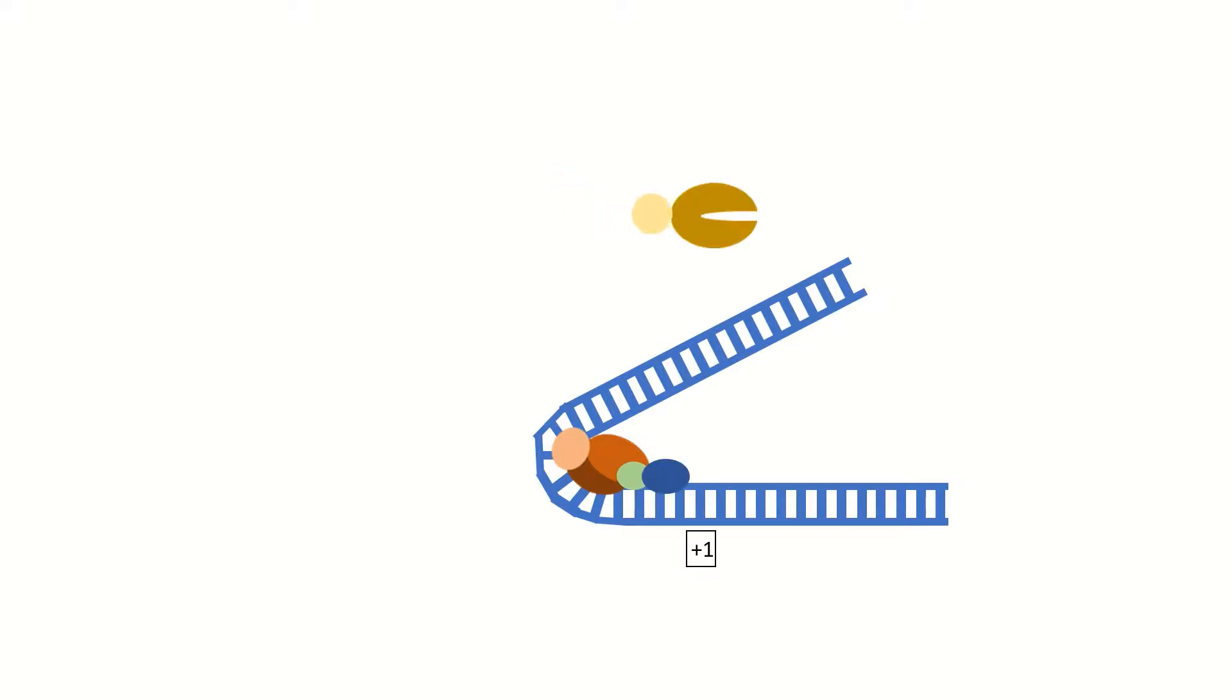TF2F associates with RNAP2 and recruits it to the promoter, forming the DAB-PolF complex. Similarly to the sigma factor in E. coli, TF2F reduces nonspecific interactions between RNAP2 and DNA, making it more targeted to the promoter.